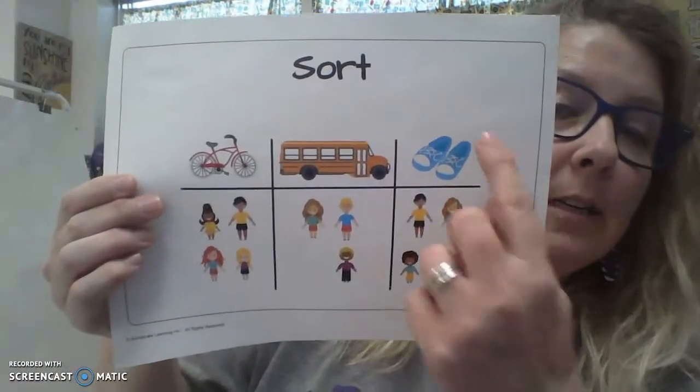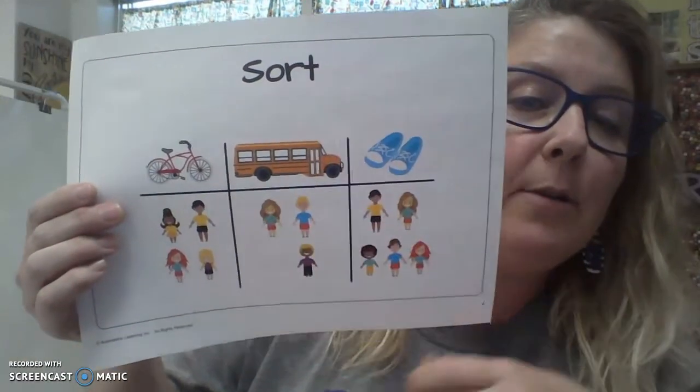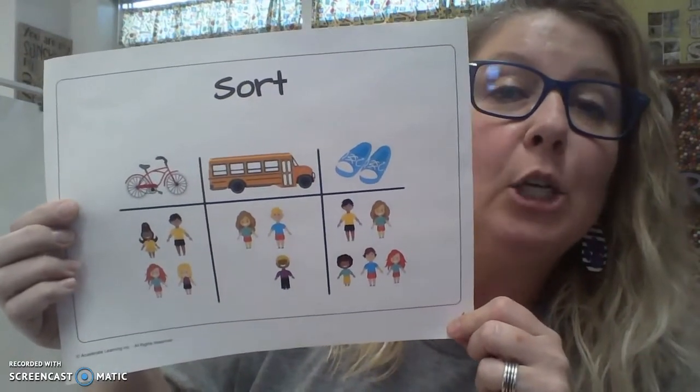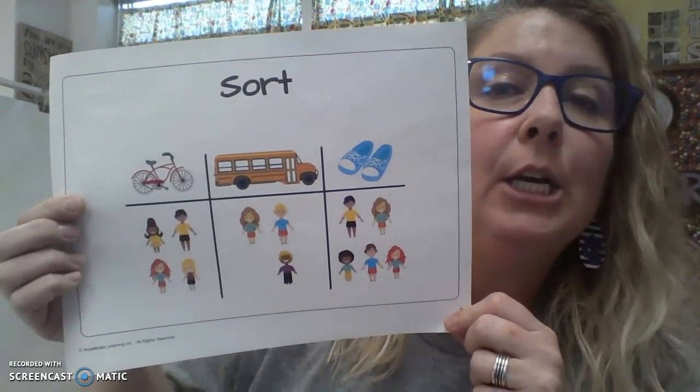The next one is sort. So when you sort information, you put it in categories. Say it with me. Sort. Sort.